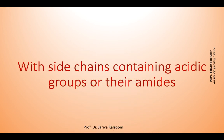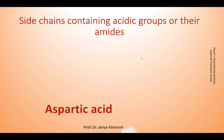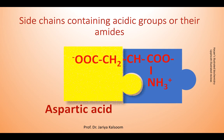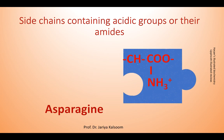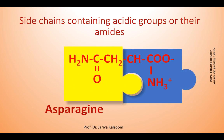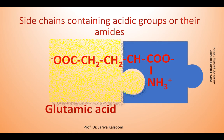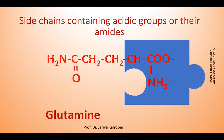Amino acids may also contain acidic groups or their amides in their side chains. For example, aspartate or aspartic acid, or the amide of aspartate which is asparagine. There may also be glutamate or glutamic acid. Glutamate not only serves as a neurotransmitter but also as a precursor for gamma-aminobutyric acid or GABA, which is also a neurotransmitter. The amide of glutamate is glutamine.